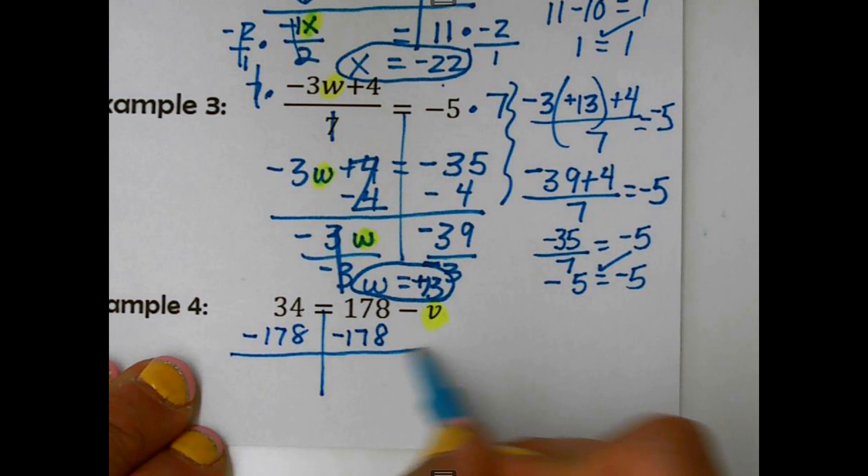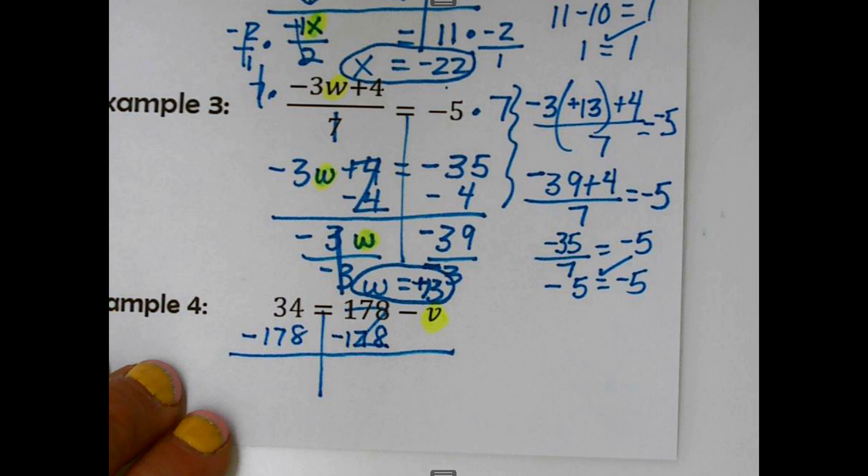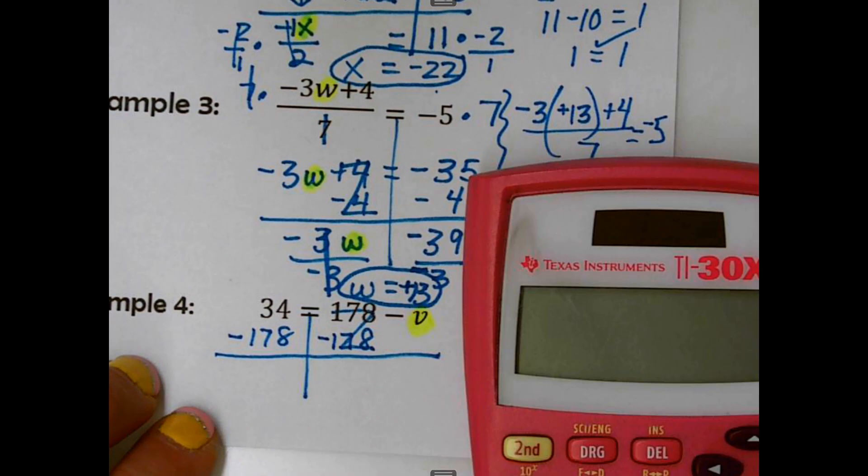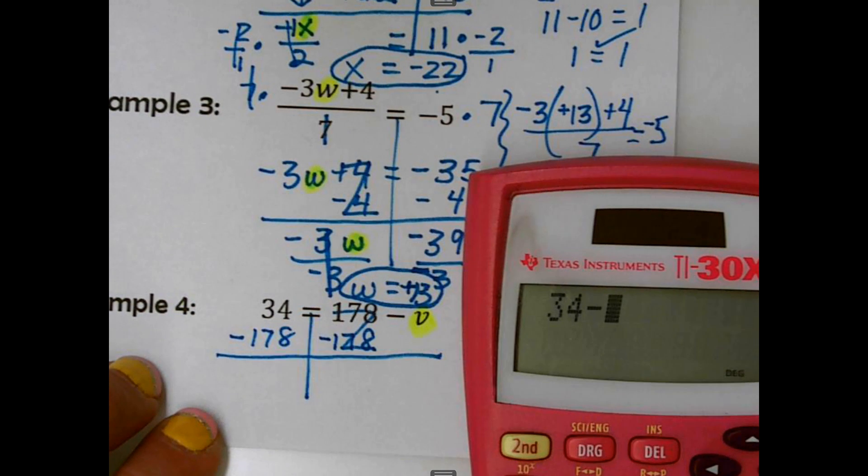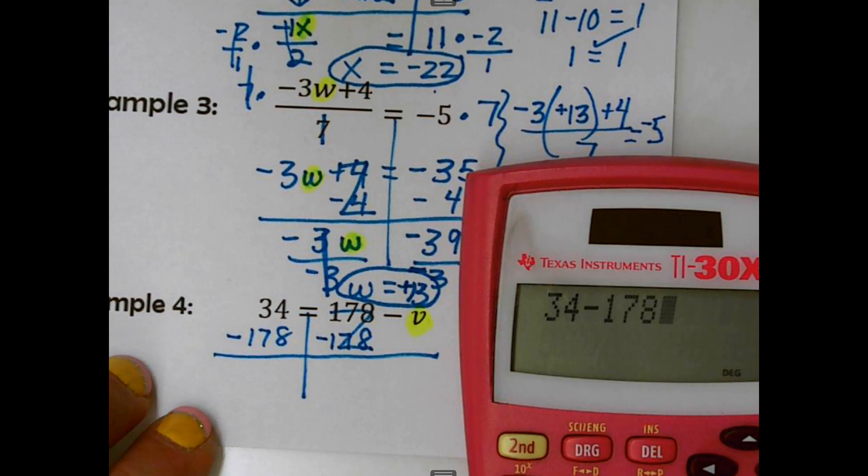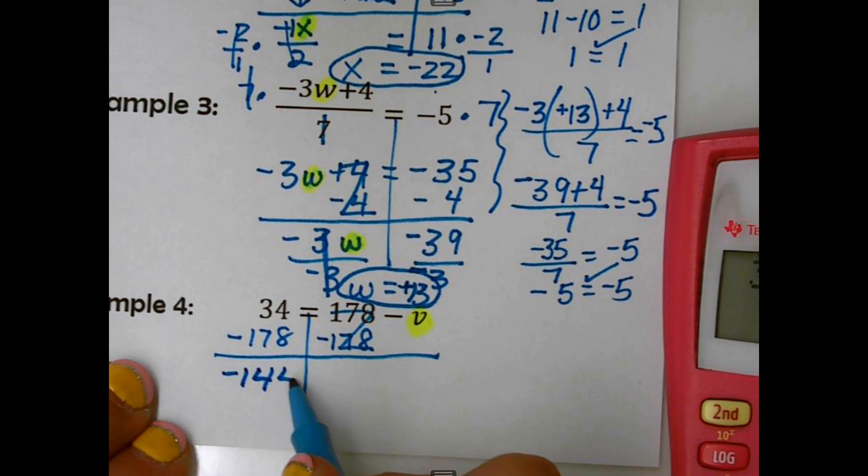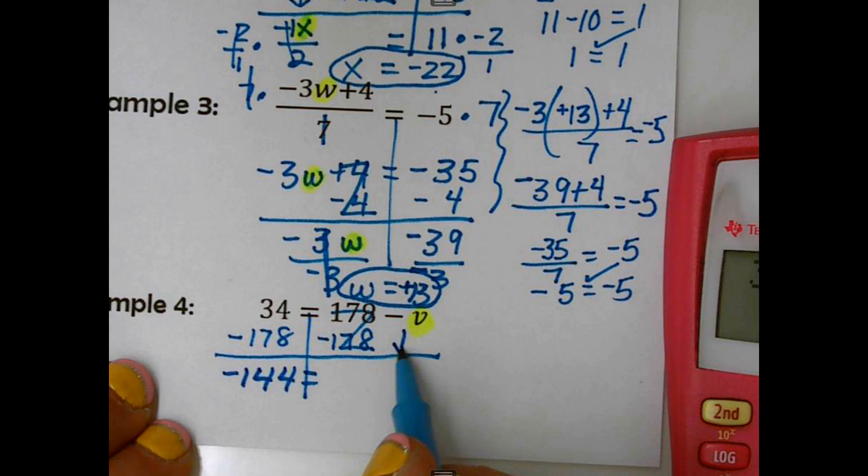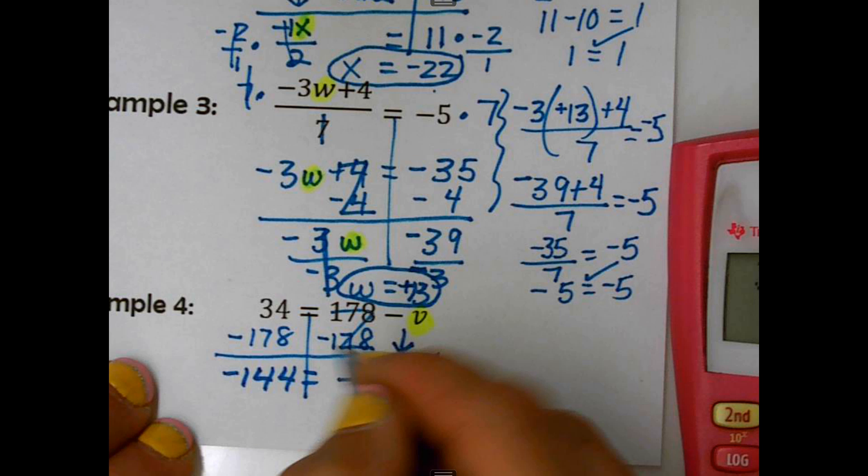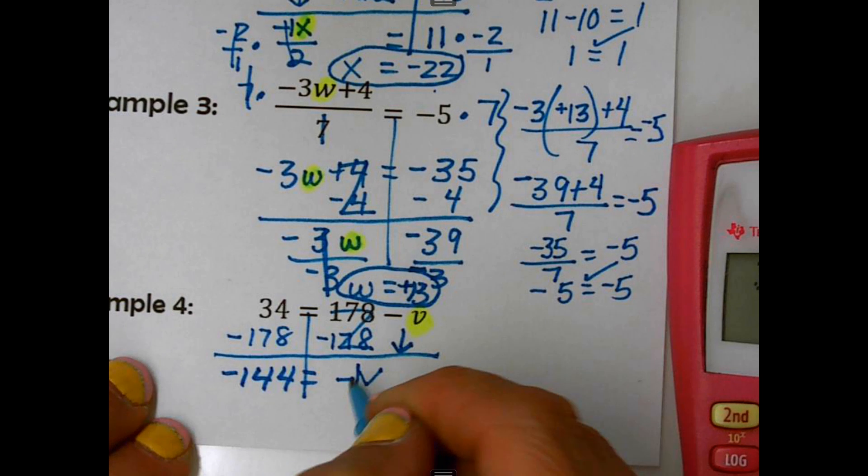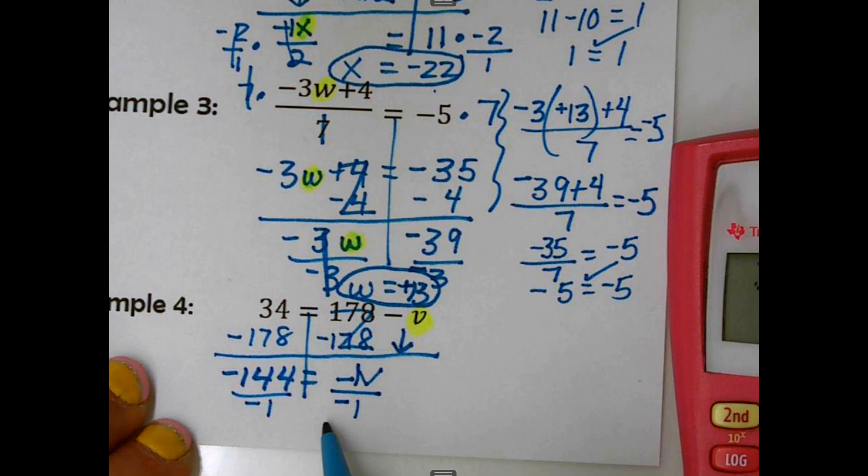I can be shy about it. So I'm going to go 34 subtract 178. So there it is. Negative 144 equals. Now bring this down. Negative v. Invisible 1. So it's invisible negative 1 because of that opposite sign in front of it. I am going to divide by negative 1. And so we end up getting a negative divided by a negative is a positive. And that's okay if the variable is on that right-hand side. That can happen sometimes.